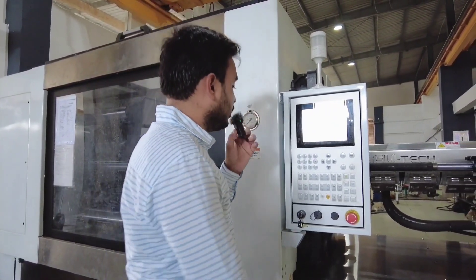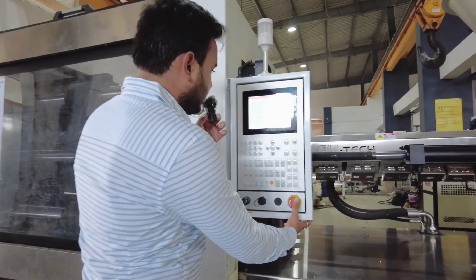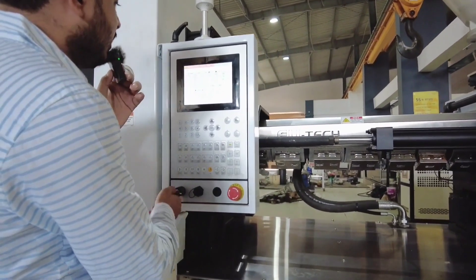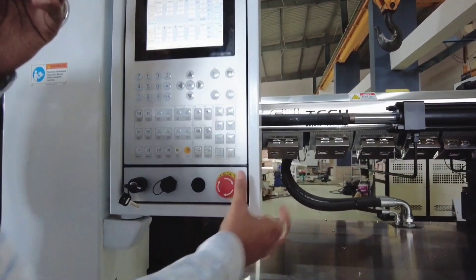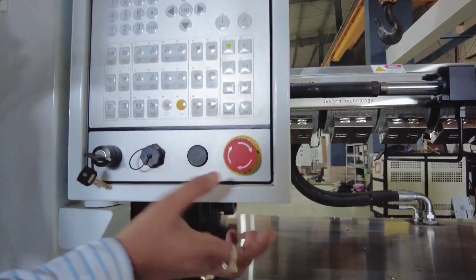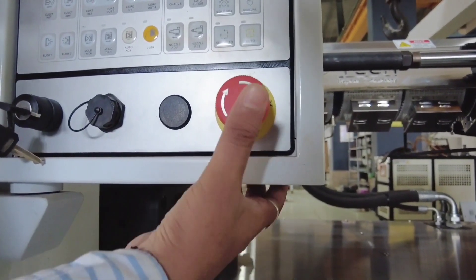So this is our emergency switch. When I press this emergency switch, the alarm will start. The alarm will start and it will be written on our screen as emergency operated. For example, I am just pressing it.